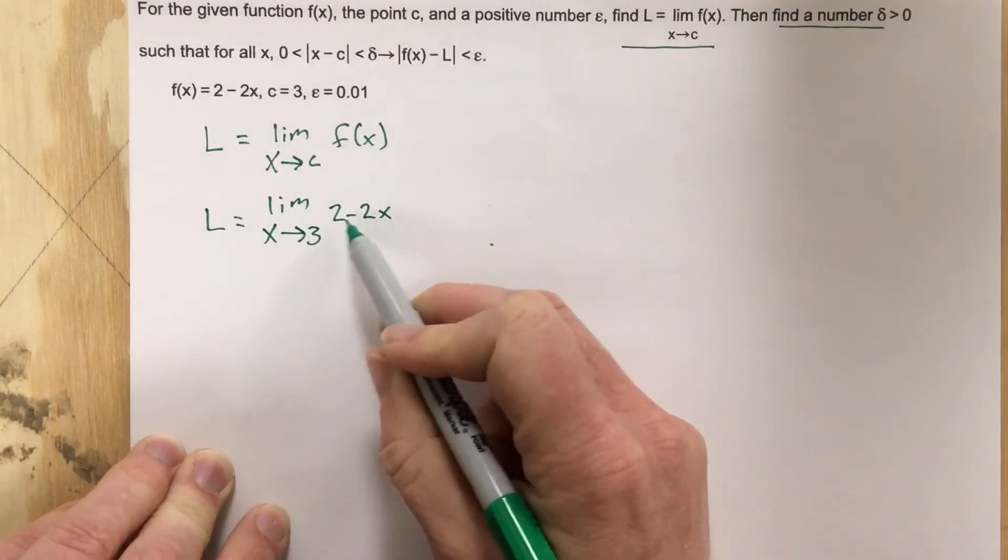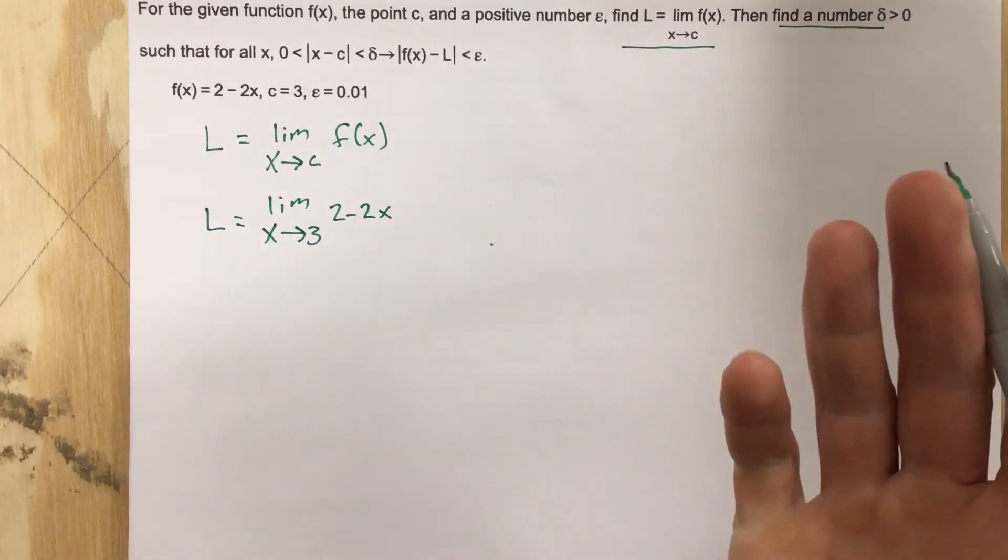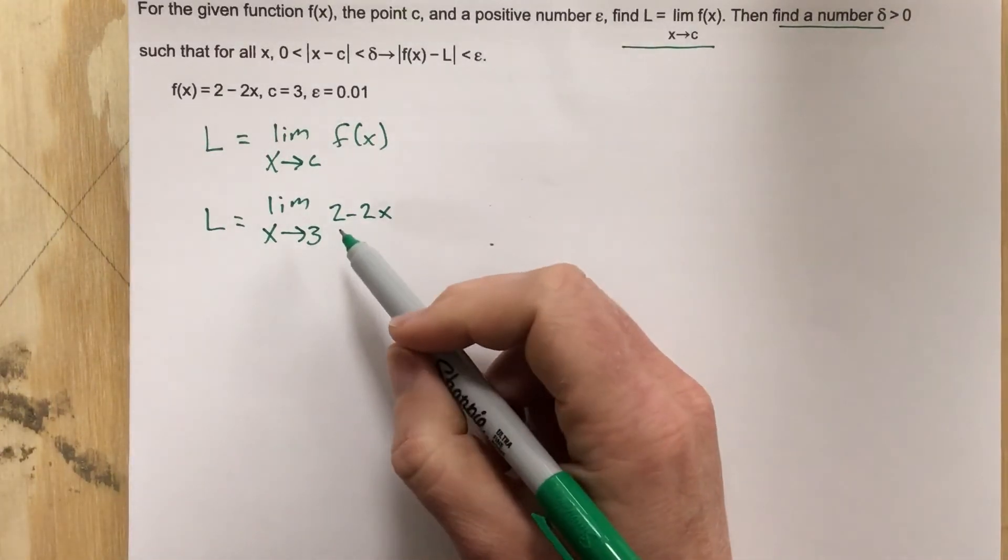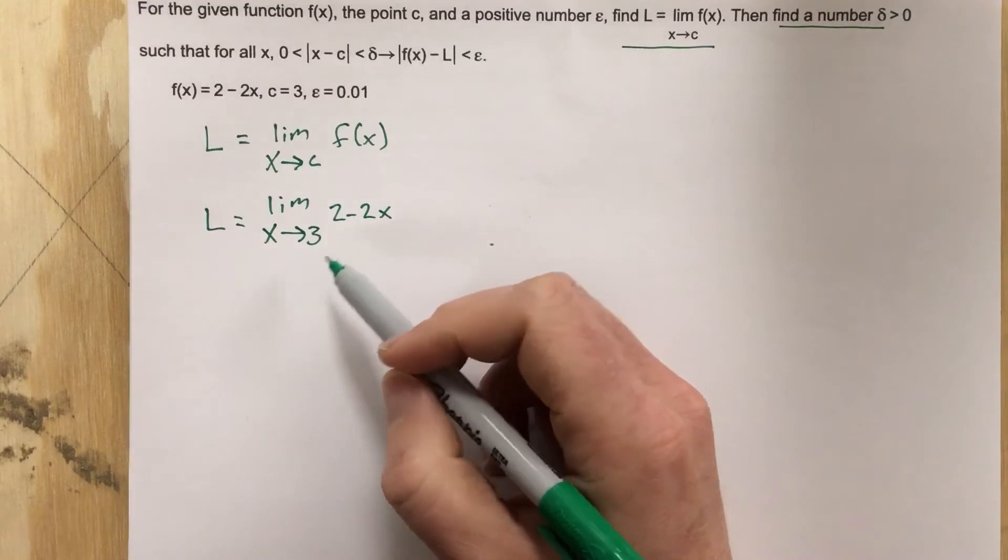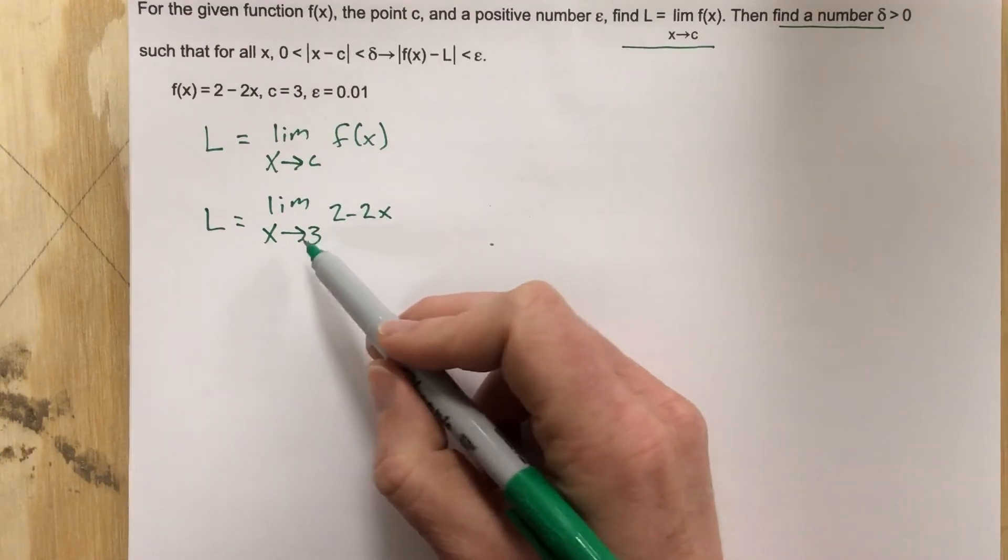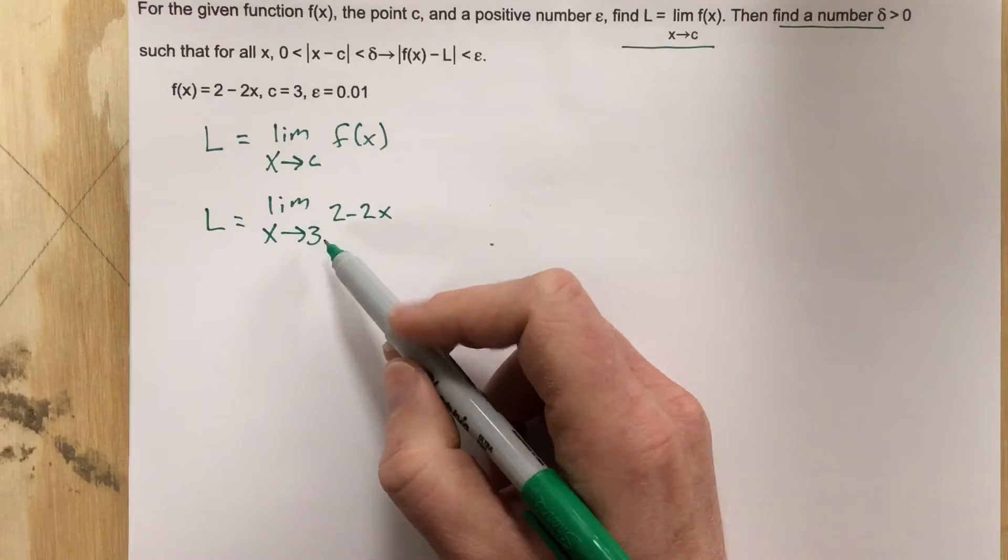that means L equals the limit as x approaches 3 of 2 minus 2x. Well, because this is a linear or polynomial, however you want to define it,